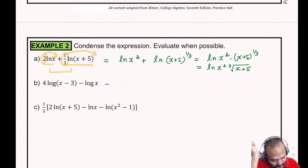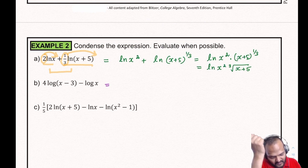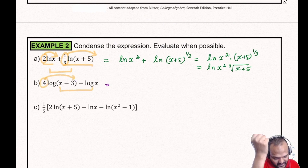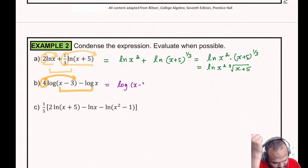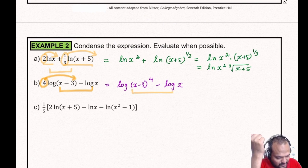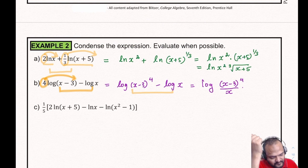For the second condensing problem: 4·ln(x−3) − 7·ln(x). Raise to powers first: ln((x−3)⁴) − ln(x⁷). The subtraction translates into division: ln((x−3)⁴ / x⁷).